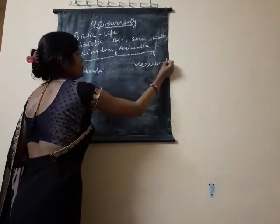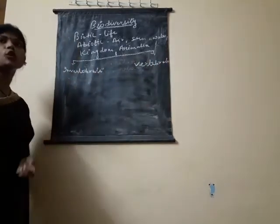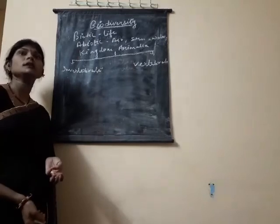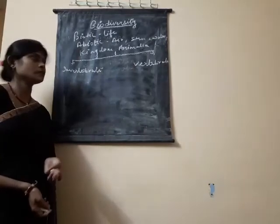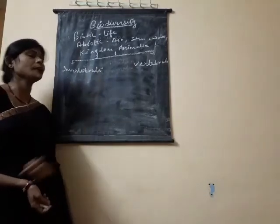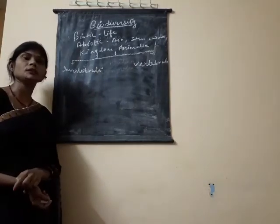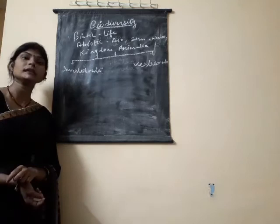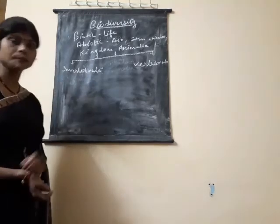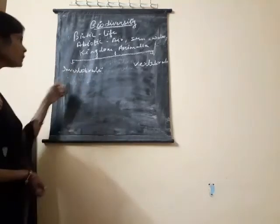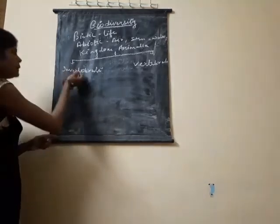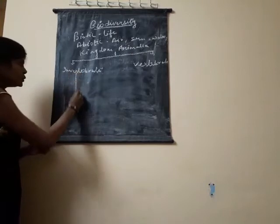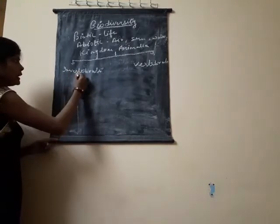Invertebrate means absence of dorsal tubular nerve cord, gill slits, and vertebral column. Vertebrate means presence of dorsal tubular nerve cord, gill slits, and vertebral column. Invertebrates are further divided into nine phyla.